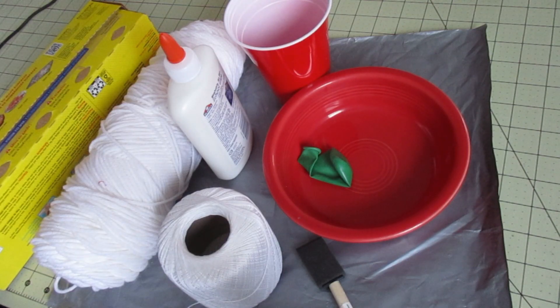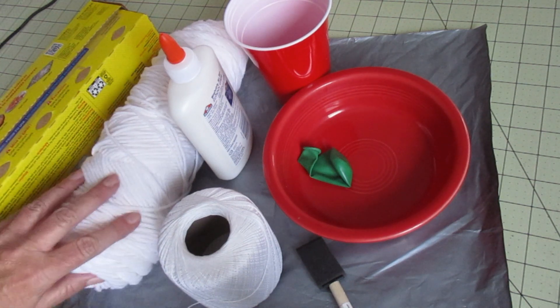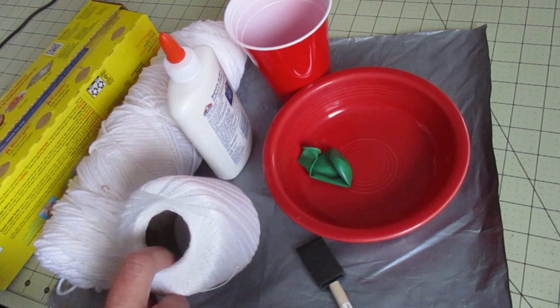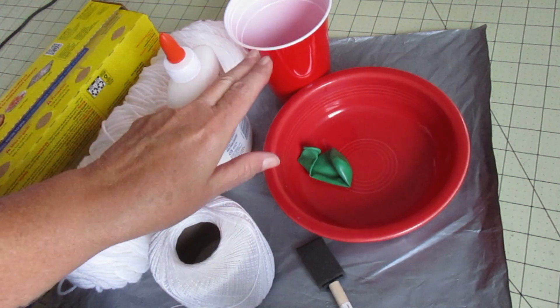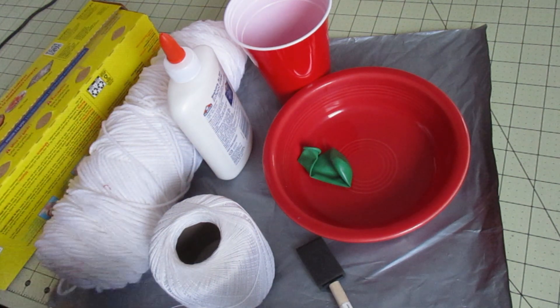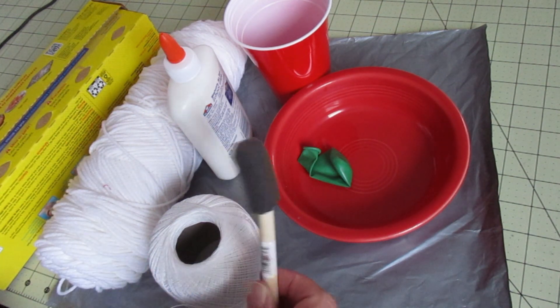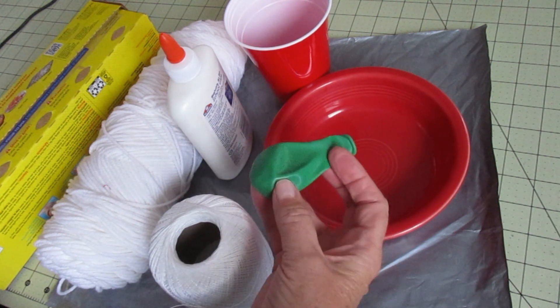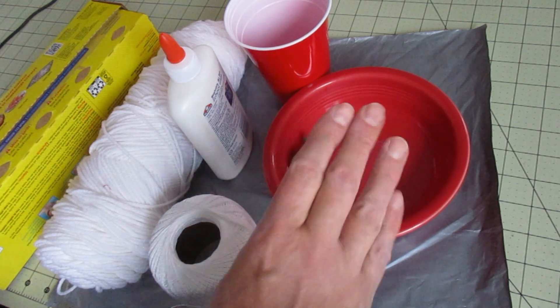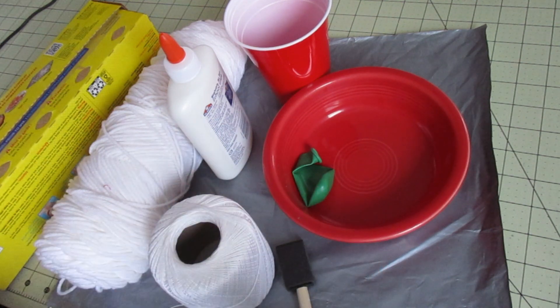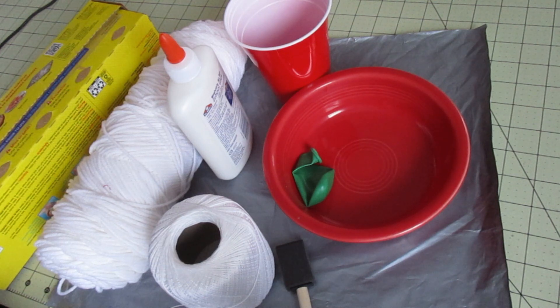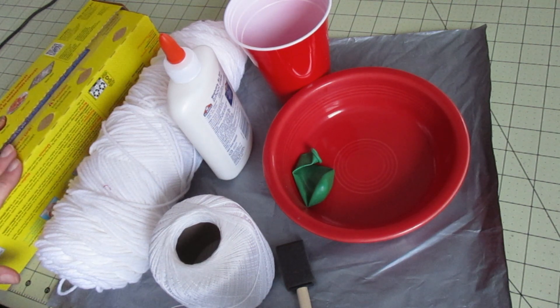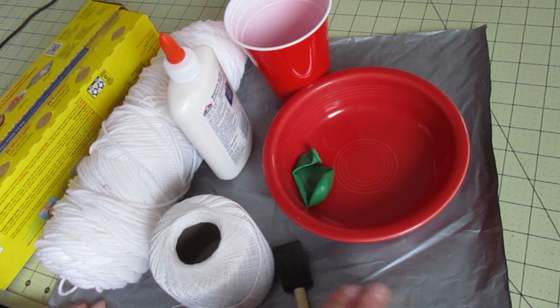For this project you will need string, twine, or yarn. I'm using cotton crochet thread. You'll need some white glue, some water, a sponge brush possibly if you'd like, a balloon, a shallow bowl, cellophane wrap to protect that shallow bowl. If you're using a plastic disposable bowl you won't need this. And then something to protect your work surface.